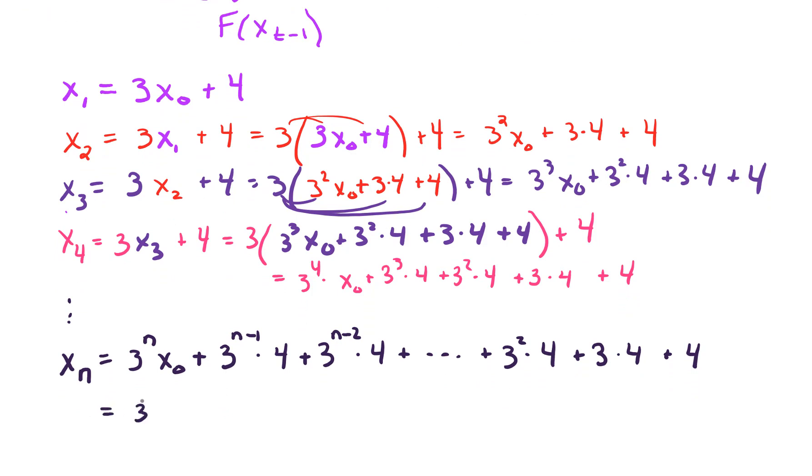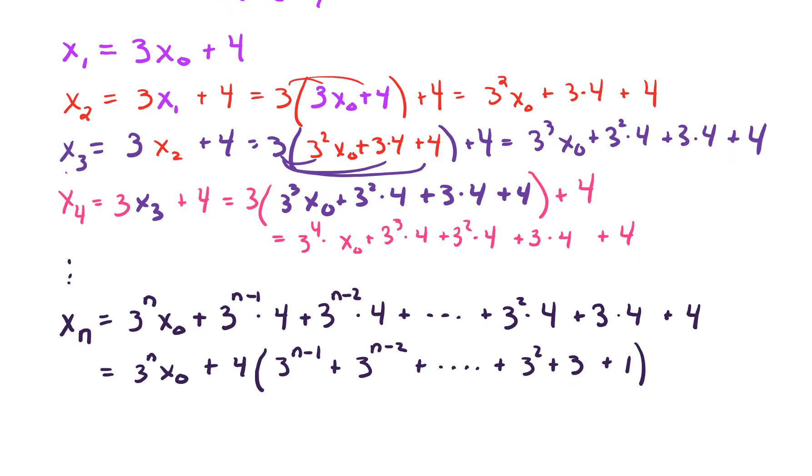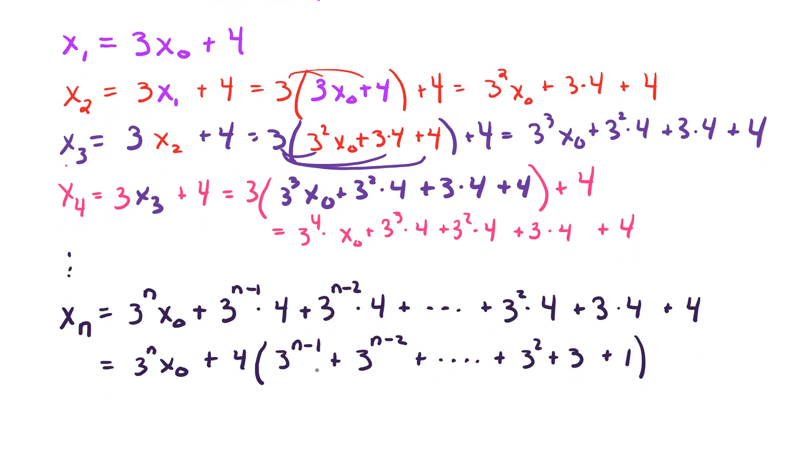We could tidy this up even a little bit more. So we could say that this is 3 to the n times x0 plus, pulling out a common factor of 4, we've got 3 to the n minus 1 plus 3 to the n minus 2 all the way down to 3 squared plus 3 plus 1. Those of you that know something about geometric series and a finite geometric series could even simplify this right-hand side further. We will talk about geometric series later on in our course, so for now I'm going to leave it with that big summation in there. I'm going to leave it as is, because the main point of what we're doing is how do we find an explicit formula for x sub n.